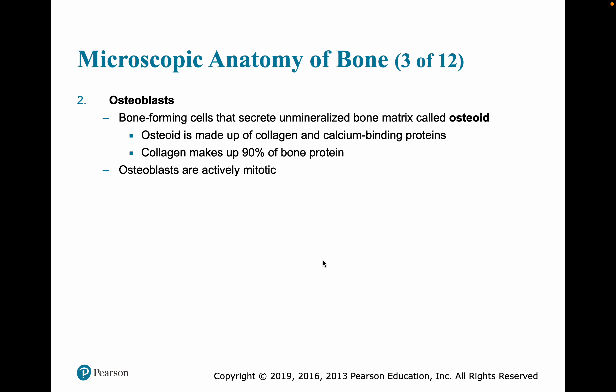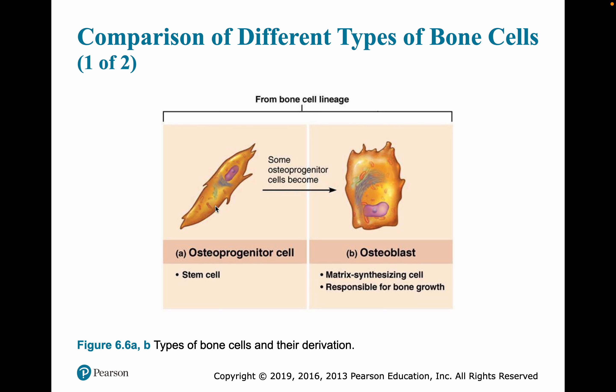Osteoblasts are bone-forming cells. They secrete unmineralized bone matrix called osteoid, made up of collagen and calcium-binding proteins — collagen makes up about 90% of bone protein. Osteoblasts are still actively mitotic; they can still divide. A progenitor cell differentiates into an osteoblast, and the osteoblast begins secreting that matrix of calcium-binding proteins and collagen.